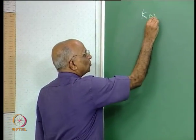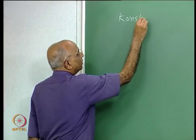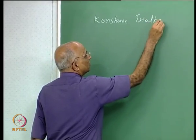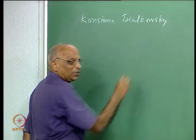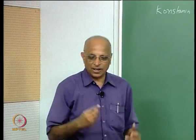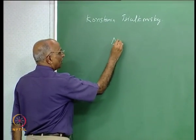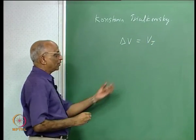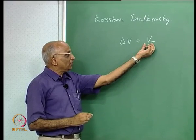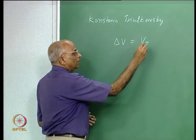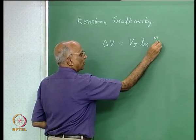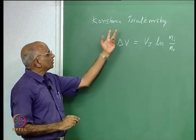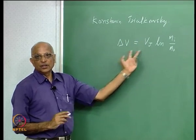We talked about the Russian school teacher Konstantin Tsiolkovsky. We told ourselves he derived the rocket equation, and we derived it in class. The ideal velocity given by a rocket equals the efflux velocity or jet velocity — the velocity with which gases leave the rocket — multiplied by the logarithm of the initial mass divided by the final mass. This is Tsiolkovsky's equation, or the rocket equation.